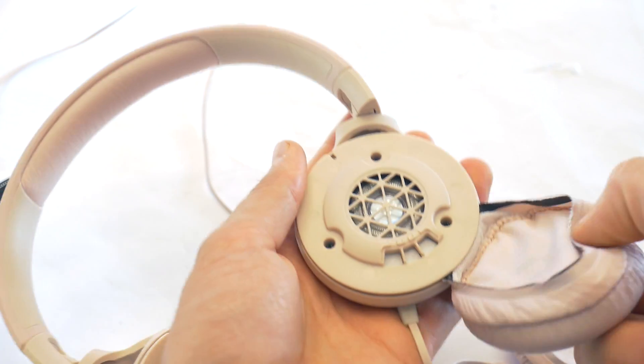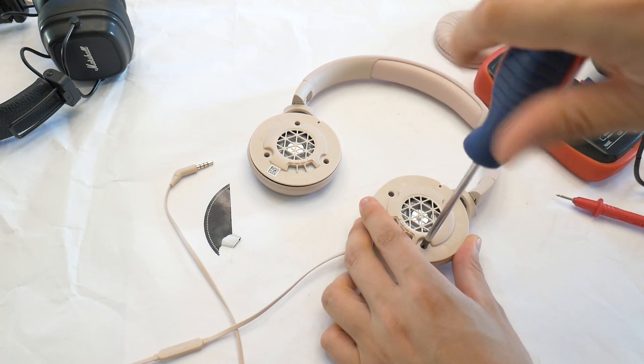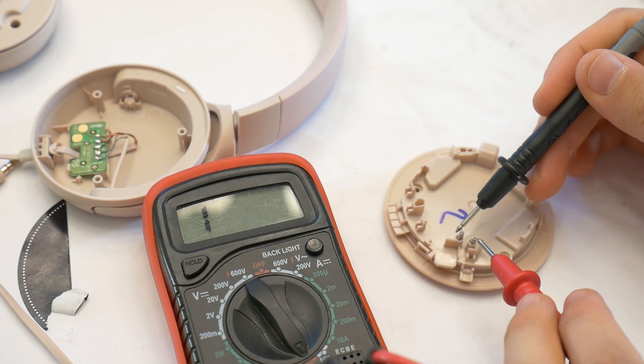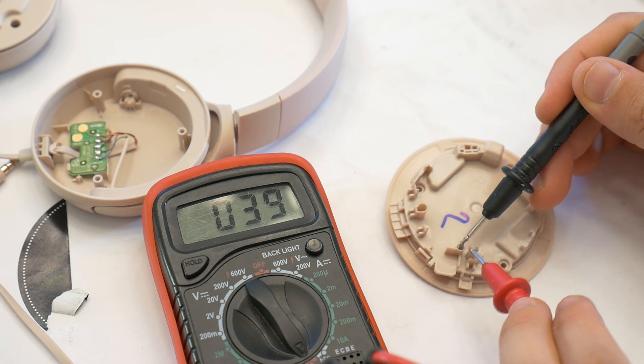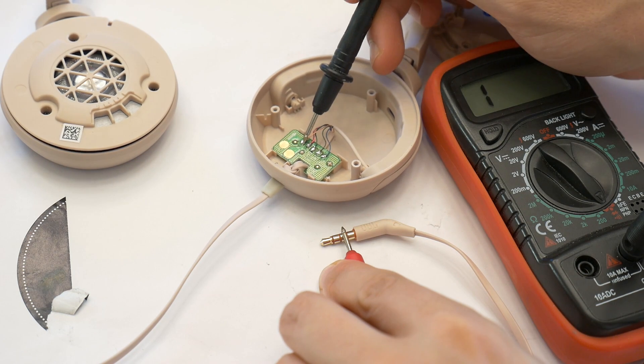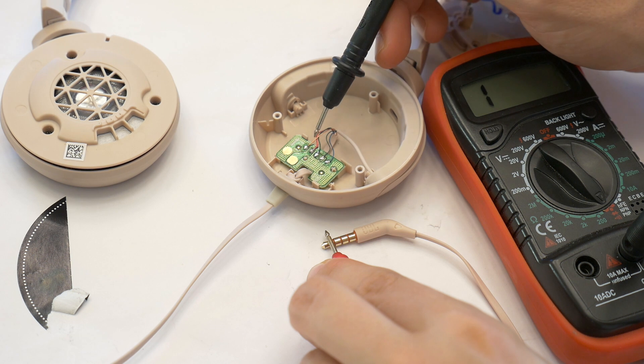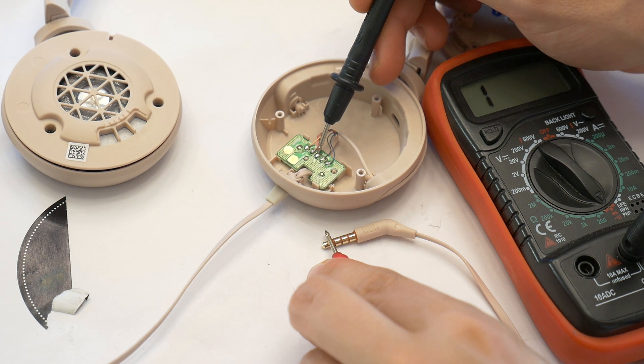take off both earpad cushions, unscrew the headphone case, turn on multimeter resistance mode, and check if the headphone speaker driver is healthy. Then check if the connection is healthy from the 3.5mm jack to the headphone mainboard wires.